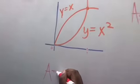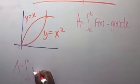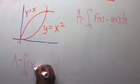A equals the integral from 0 to 1 of x, which is the upper function, minus x squared, which is the lower function, dx.